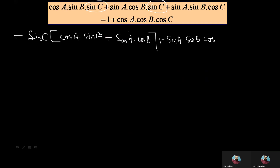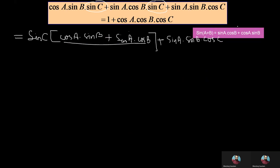Now, if you observe the bracket, it has cosA·sinB plus sinA·cosB. This can be compared with the formula sin(A+B) equals sinA·cosB plus cosA·sinB. So we replace the bracket by sin(A+B).